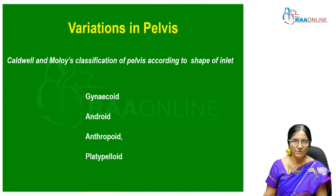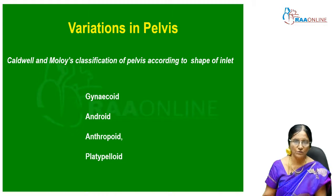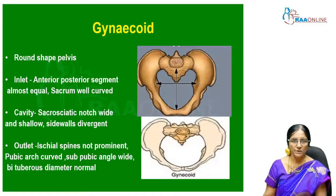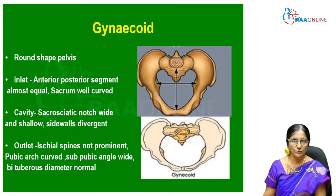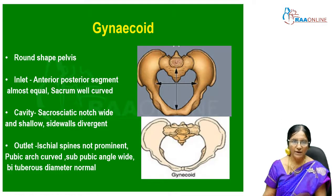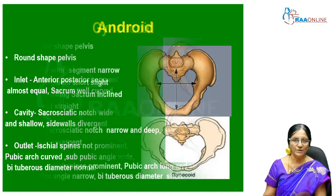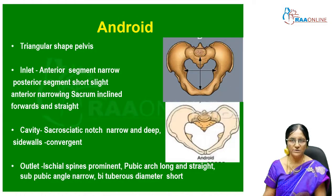According to Caldwell and Moloy, the pelvis is classified into gynecoid, android, anthropoid, and platypelloid. The gynecoid pelvis has a round shape; the inlet anteroposterior and transverse segments are almost equal; the cavity has a well-curved sacrum, wide sacrosciatic notch, divergent side walls; ischial spines are not prominent; pubic arch is well curved with a wide subpubic angle and normal bituberous diameter. This is an ideal pelvis for normal delivery.